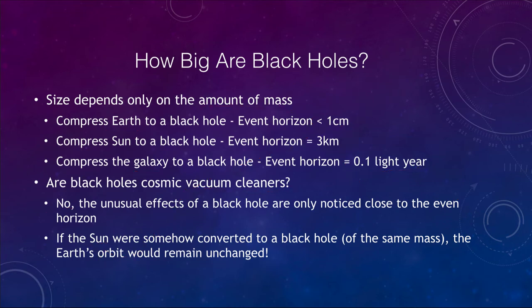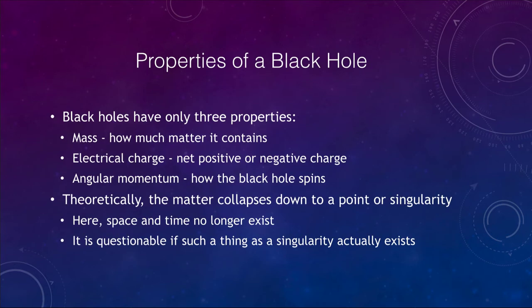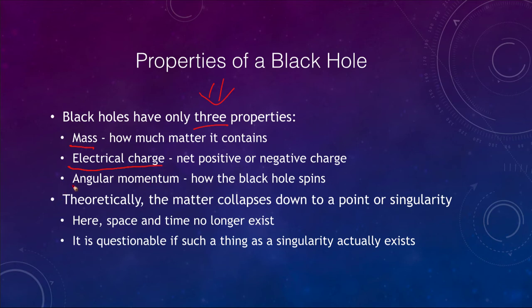What can we know about a black hole? That can be very difficult, because black holes have only three properties. When we talk about stars, we can talk about temperatures, compositions, and all other things, but black holes have only three properties: they have a mass — how much material they contain — they can have an electrical charge, if they have a net positive or negative charge, and they can have angular momentum or spin. That's it. There is nothing else that we can know about a black hole.